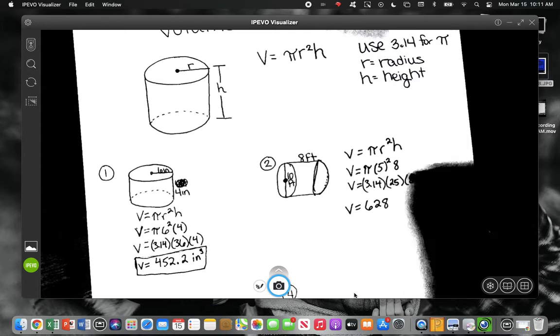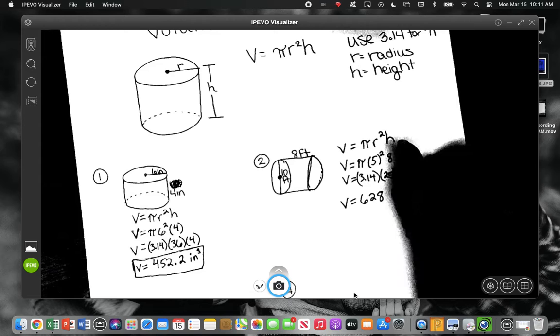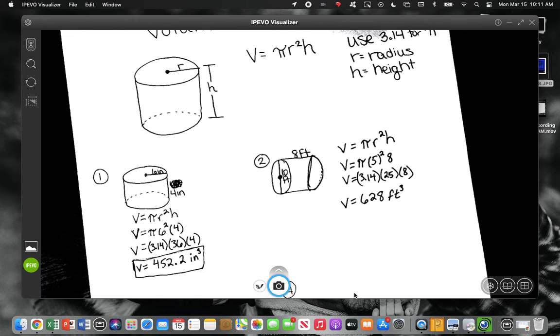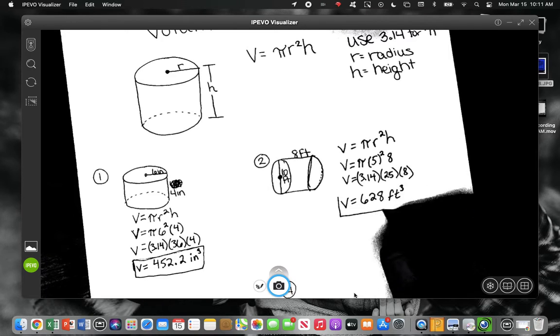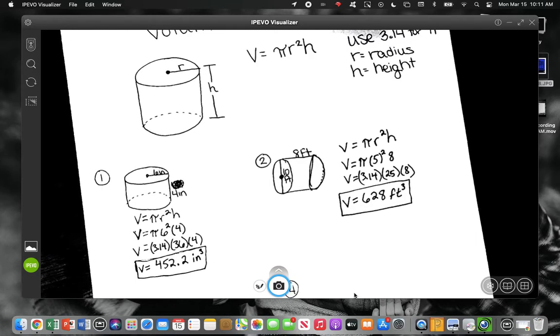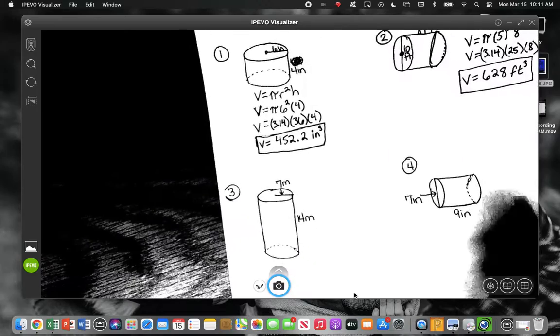No rounding. Alright. 628, but I need to put a label on it. What is it? Not squared, right? Because we're dealing with volume. Yeah, cubed. Feet cubed.